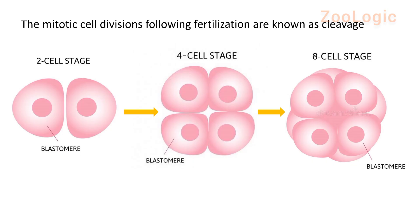The development of the zygote begins with a series of rapid mitotic divisions, known as cleavage, that converts a single-cell zygote into a multicellular embryo. The pattern of cleavage differs greatly among animals, but we are discussing the basic pattern here. The first division cleaves the zygote into two cells — this is termed the two-cell stage. Each cell is now termed a blastomere. The second cleavage produces the four-cell stage, then the eight-cell stage, and the process of mitotic division continues.